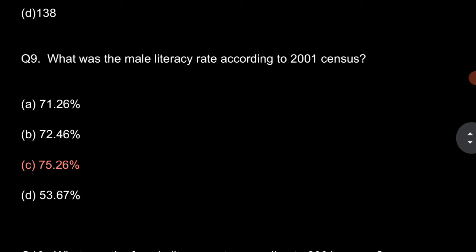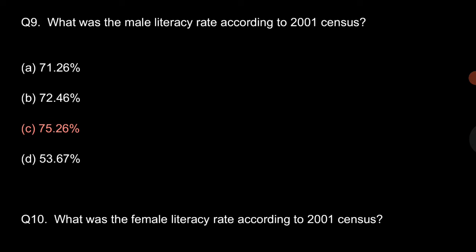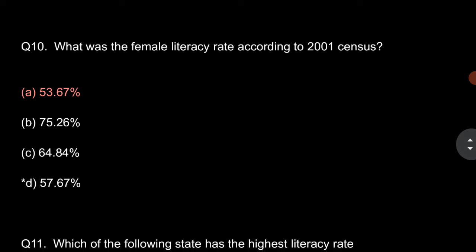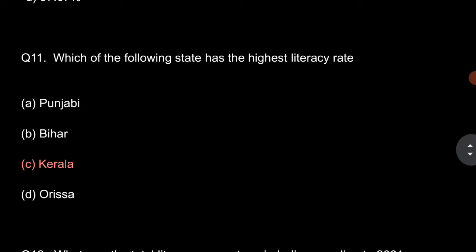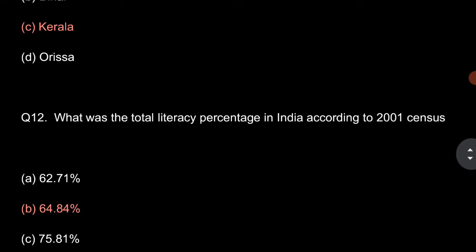Question number 9: What was the male literacy rate according to the 2001 census? So, male literacy rate was 75.26%. What was the female literacy rate according to the 2001 census? It was 53.67%. Which of the following states has the largest literacy rate? So, it is Kerala.